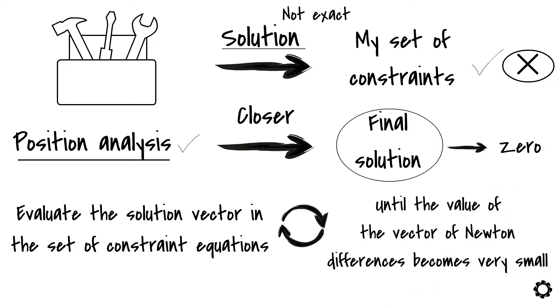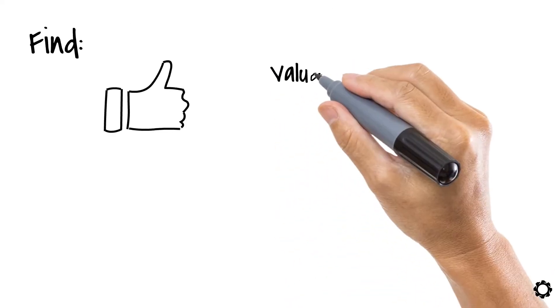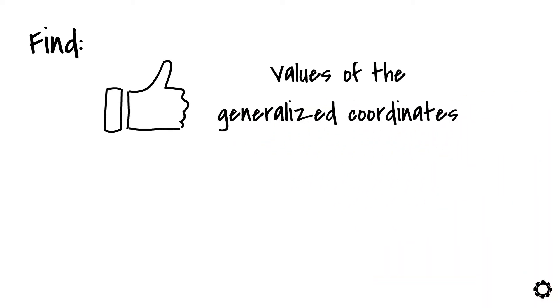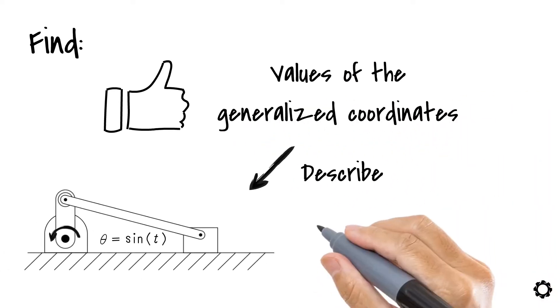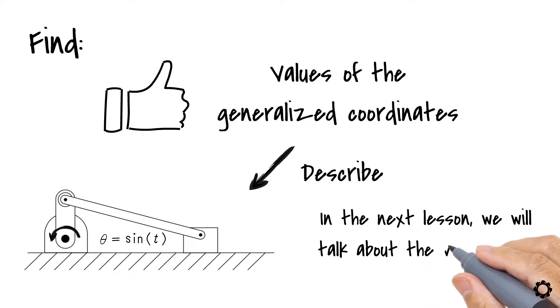All of what we have done until now is to find the acceptable values of the generalized coordinates which describe the configuration of our system. In the next lesson, we will talk about the velocity and acceleration analysis. Thanks for watching and have a nice day.